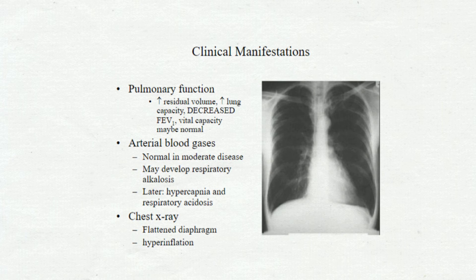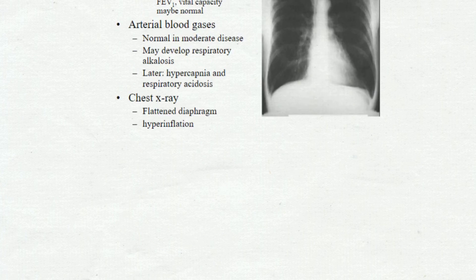Arterial blood gas findings: normal in moderate disease, may develop respiratory alkalosis. Later, hypercapnia and respiratory acidosis develop. Chest X-ray shows flattened diaphragm and hyperinflation.